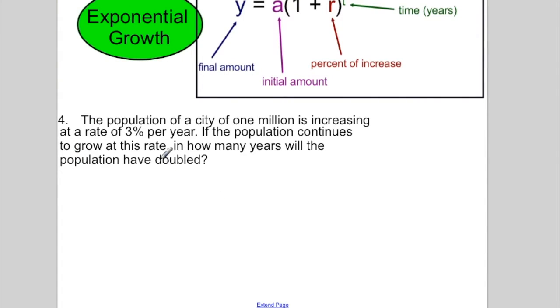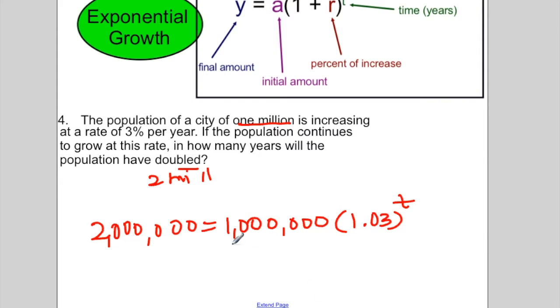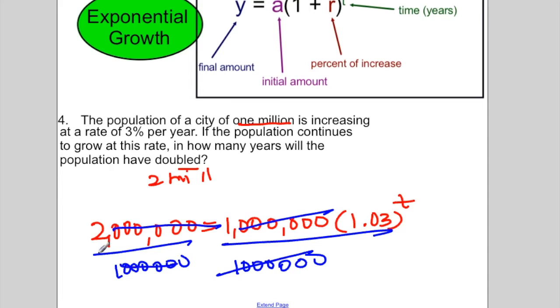Example 4. The population of another city of 1 million is increasing at a rate of 3% per year. If it continues to grow, how many years will it take for the population to double? So if we currently have 1 million, double means we have 2 million. So 2 million, that is our final amount, equals our 1 million times our rate of increase, 1 plus 3% is 0.03 to the t. Now, if I divide both sides by 1 million, these cancel, all these zeros cancel. 2 divided by 1 is 2, equals 1.03 to the t.